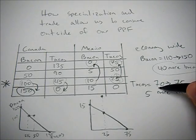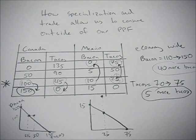And another way to see this from an economy-wide perspective is just looking at the aggregate numbers. We went from 110 to 150, and 70 to 75. So we're producing more of both by specializing.